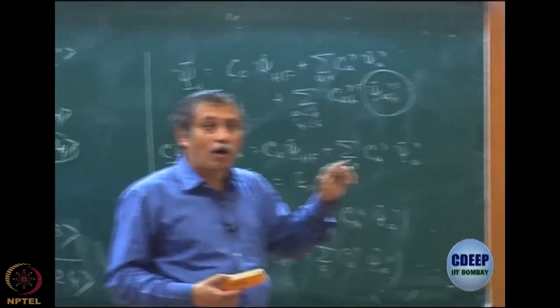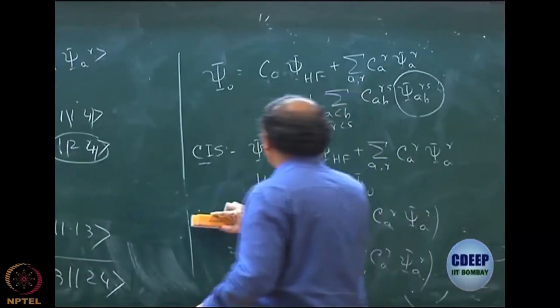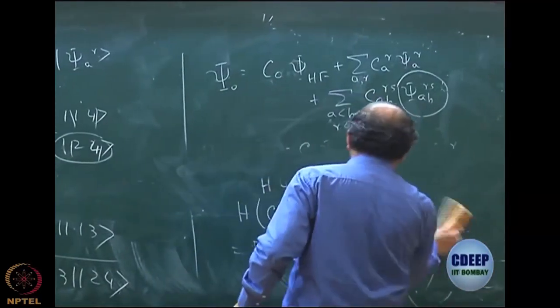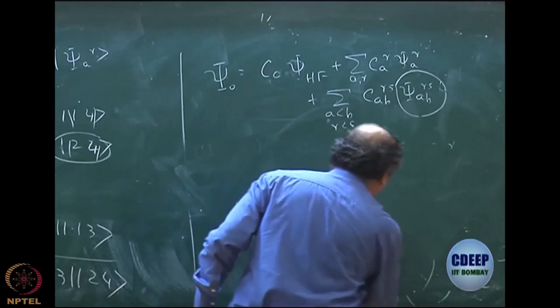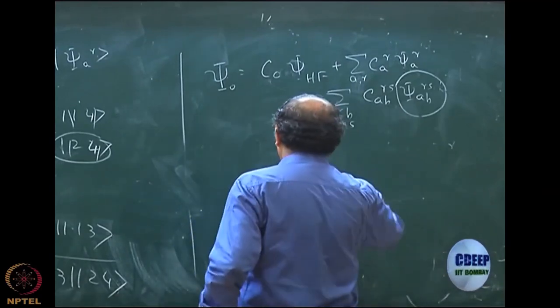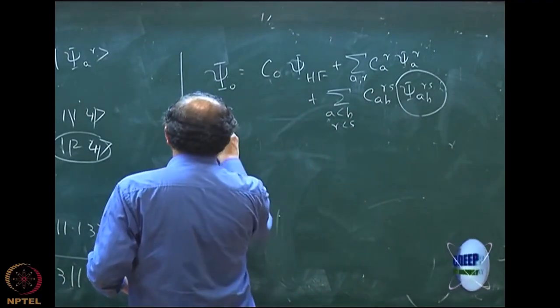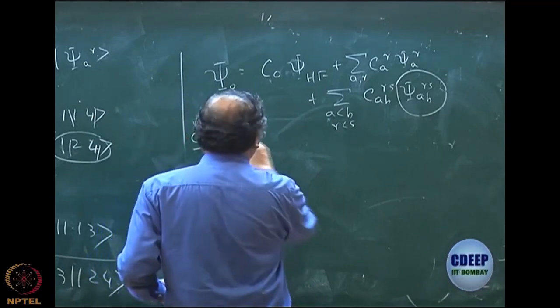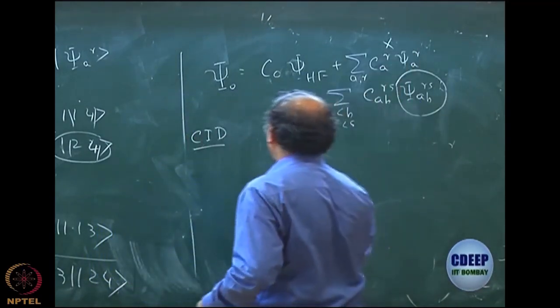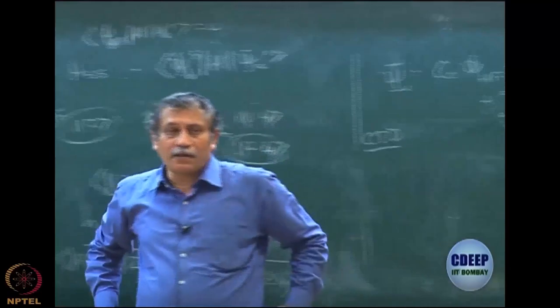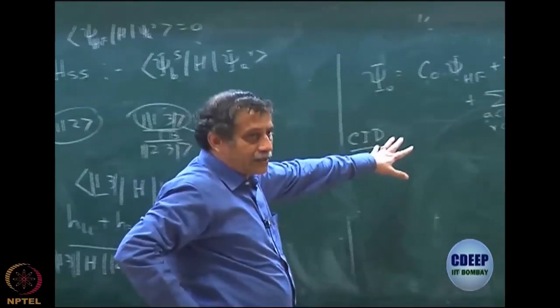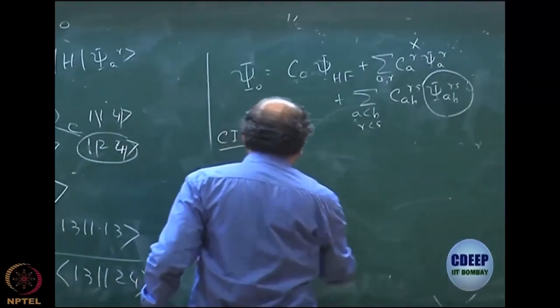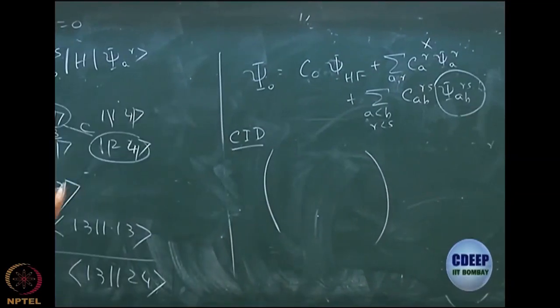So I will just look at the structure now. Now that I have understood the structure very quickly I will write down. So let us first do CI doubles, CI with only doubles, so this is no longer there. So I have Hartree-Fock and double excited determinants. So what will be the structure of the matrix now? Now I can directly write, again I do not have to derive this.